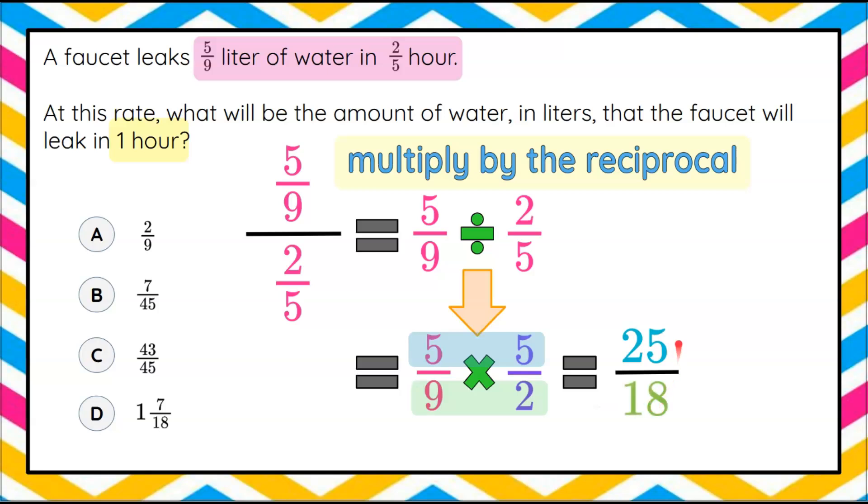This is in simplest form. 25 only has factors of five and 18 does not have a factor of five. We can see this is also an improper fraction, meaning our numerator is larger than our denominator.